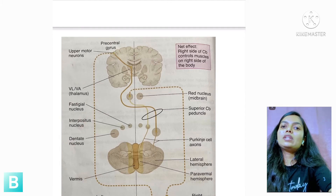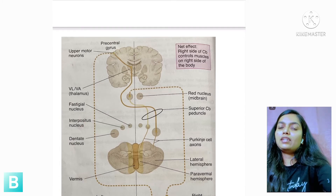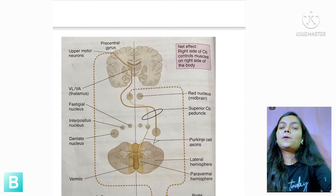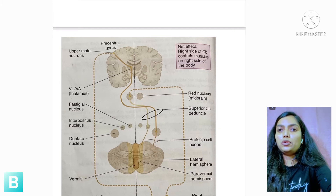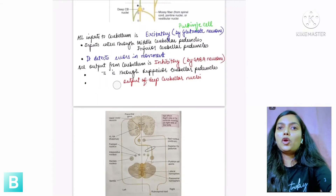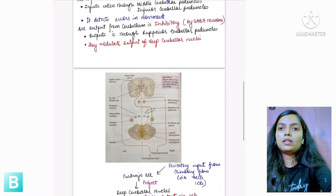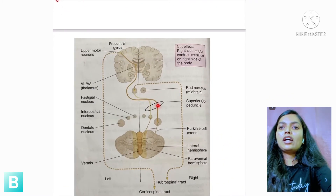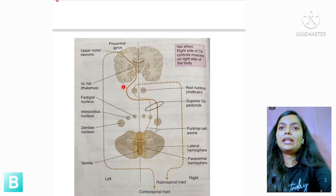The interposed nucleus is divided into two: emboliform and globose nucleus. Output from the cerebellum goes through these deep cerebellar nuclei, synapses in the dentate nucleus, and the axons exit via the superior cerebellar peduncle. These axons then cross the midline and go to the thalamus.